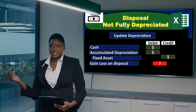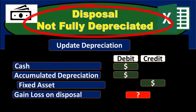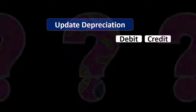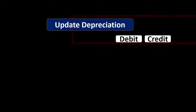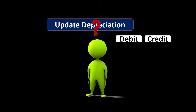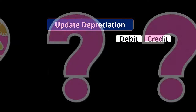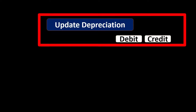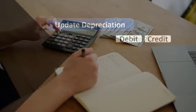In this presentation we will take a look at the disposal of property, plant and equipment for a piece of equipment that is not fully depreciated at the point of disposal. We'll think through a journal entry as we work through the closing process. We also need to consider whether depreciation has been fully recorded — specifically, whether there is a time gap between the prior adjusting entry for depreciation and the point of disposal.